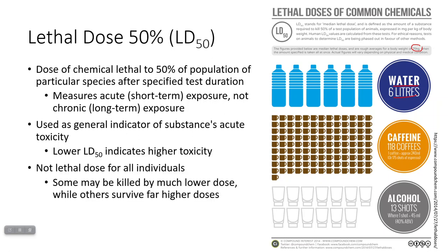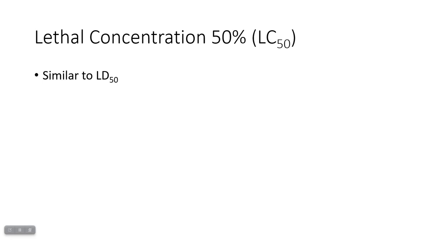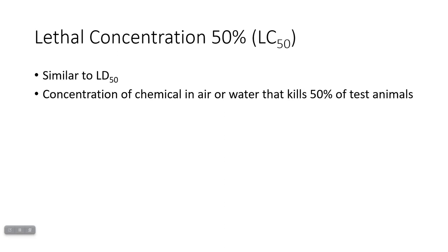Some organisms may be killed by a lower dose if they're particularly sensitive to a toxin; others may require a far larger dose to be affected. This is usually tested in animals and then extrapolated to estimate the LD50 for humans. There's also a closely related measurement called the LC50 — lethal concentration — which is similarly lethal to about 50% of the test population, but relates to the concentration of chemicals in water or air, making it very important for assessing air and water pollution effects.